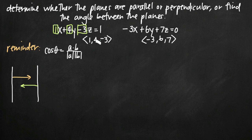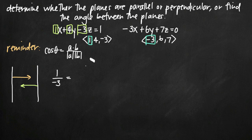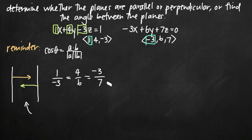The x component for my first normal vector is 1, and the x component of the other normal vector is -3. I take the ratio 1 divided by -3, and set that equal to the ratio of my y components (4 over 6) and the ratio of my z components (-3 over 7). If this equation is true, then my normal vectors are parallel, and therefore my planes are parallel to one another.